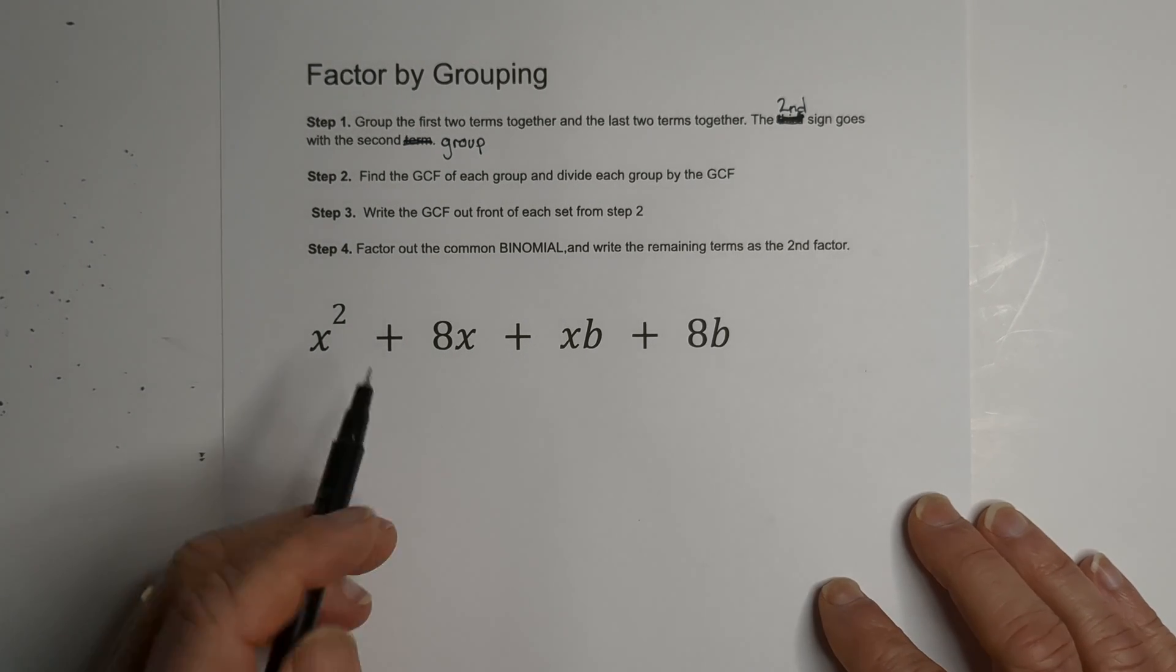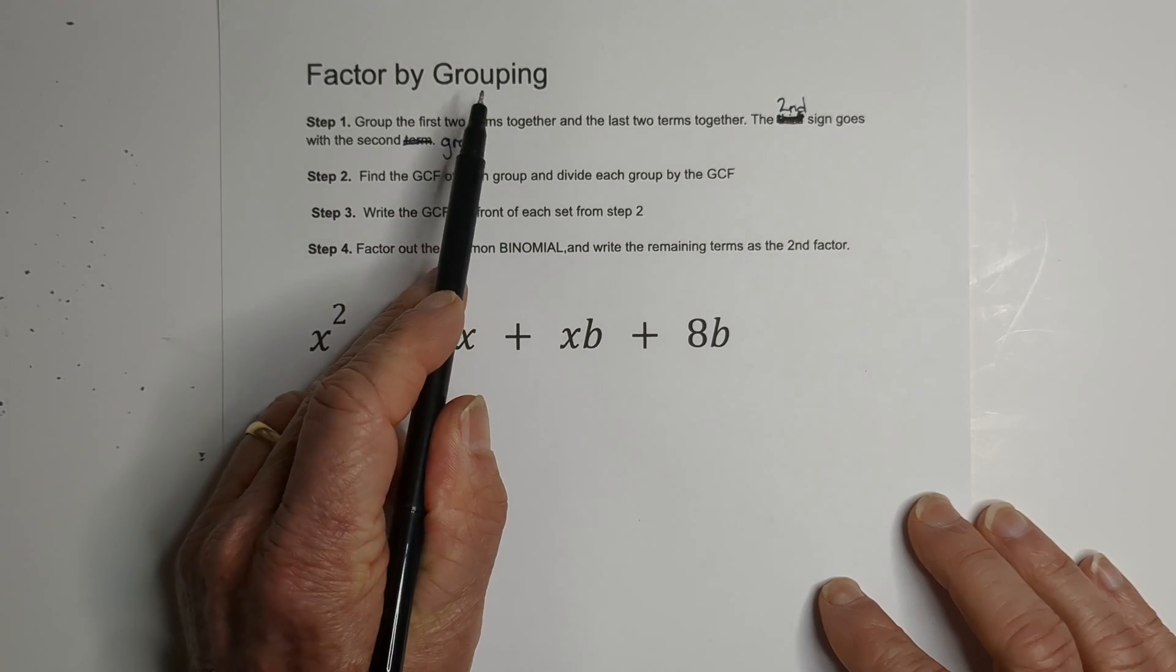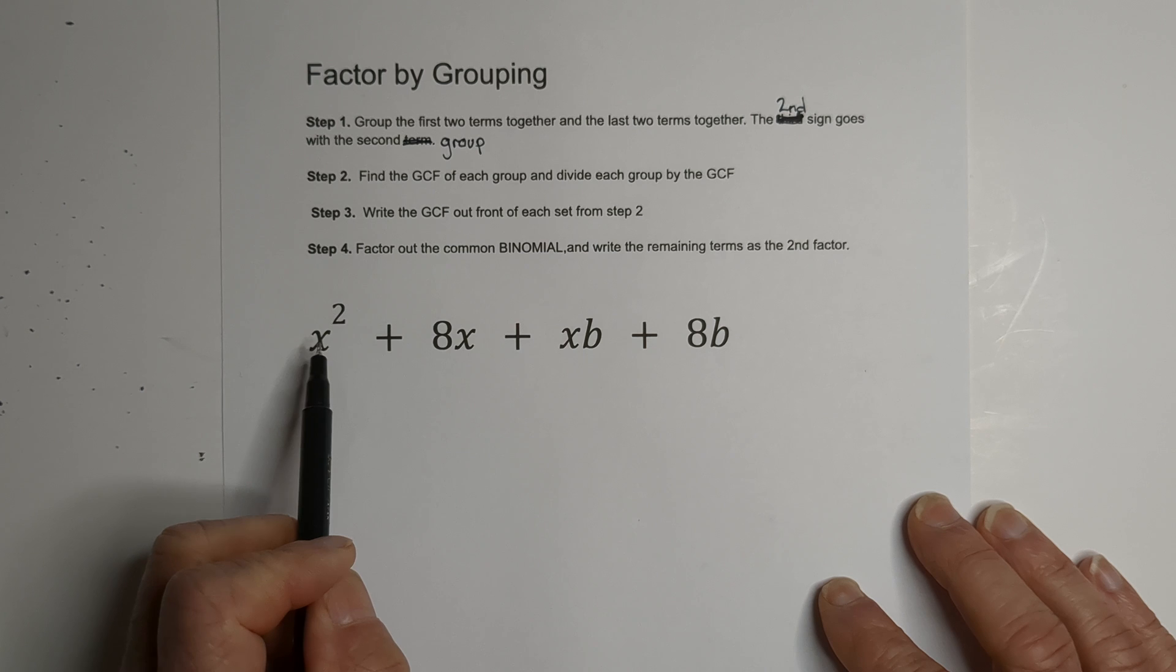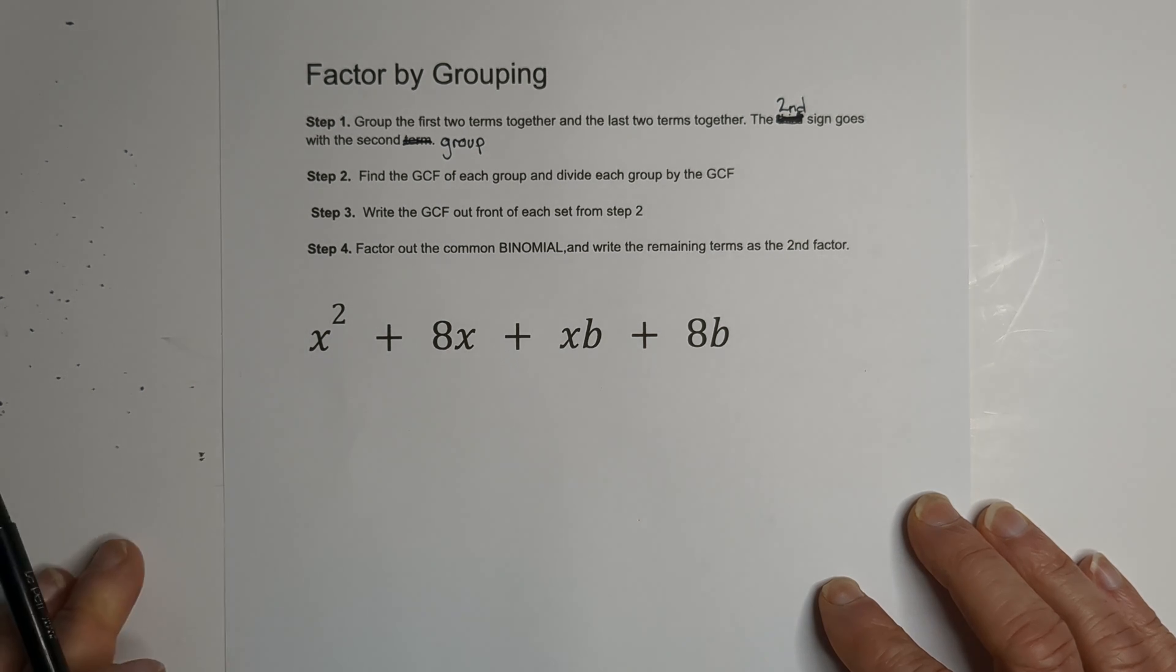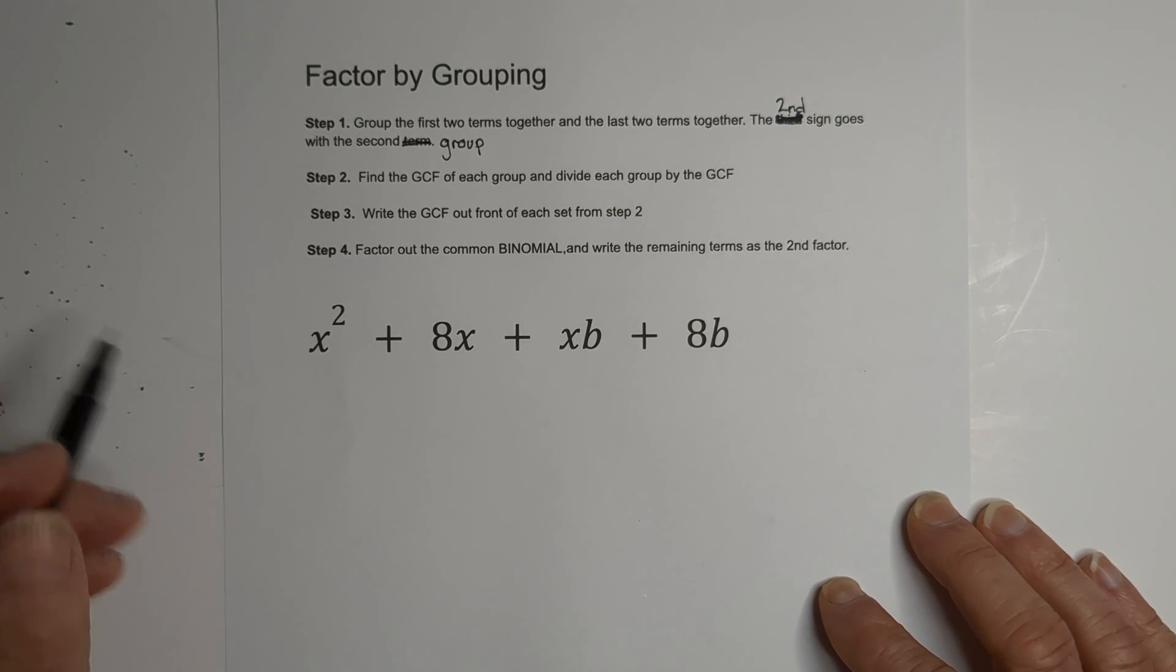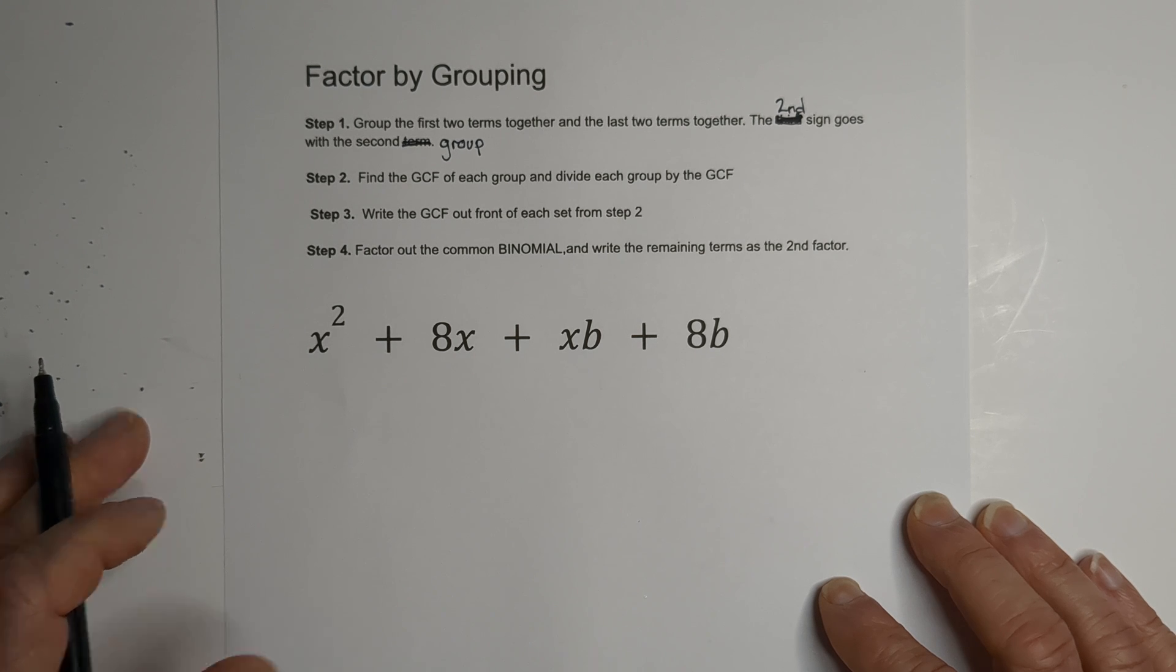Welcome to Moo Moo Math and Science. In this video, let's go over factor by grouping. And to begin with, you need four terms. And there are a couple steps,